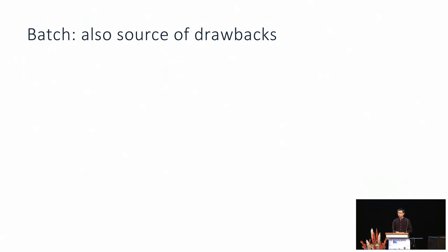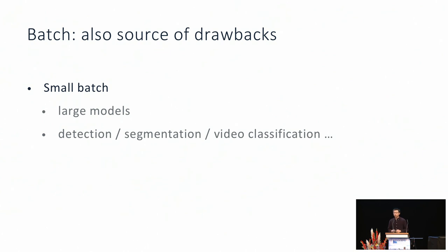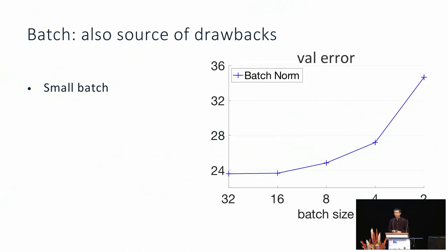Despite how successful batch norm is, the use of batch has also become a source of drawbacks. Sometimes you may have to use a small batch size due to memory constraints. This is quite common if you want to train large models or train on small devices. Many computer vision applications such as detection, segmentation, and video classification are typically trained with small batch size. As we can see from this figure, the error rate for batch norm increases a lot when trained with smaller batch size. Another category of problems is the varying batch problem — the concept of batch can be varying in different scenarios, which we will cover later in more detail.